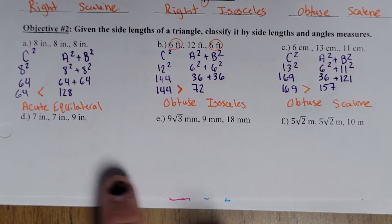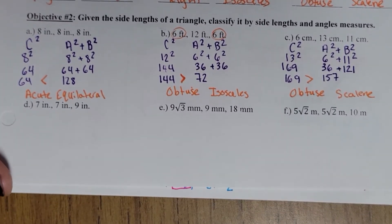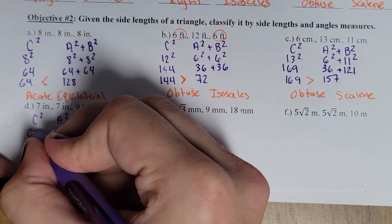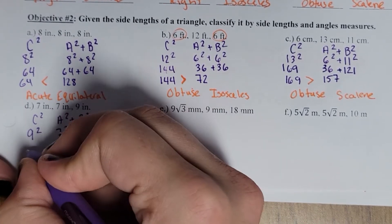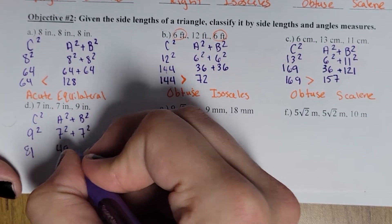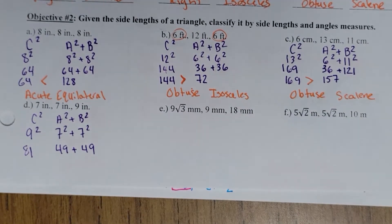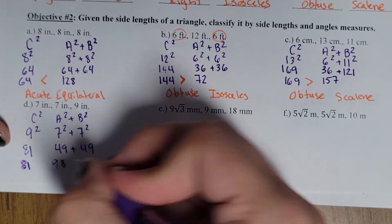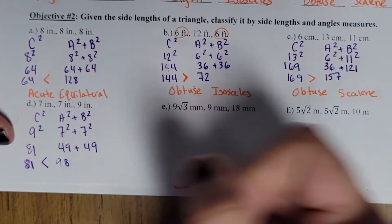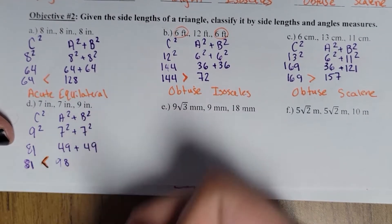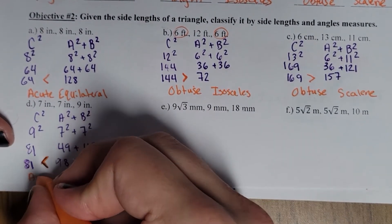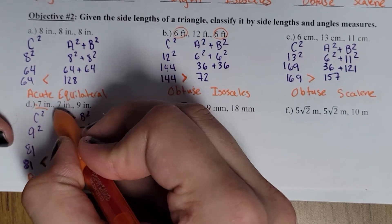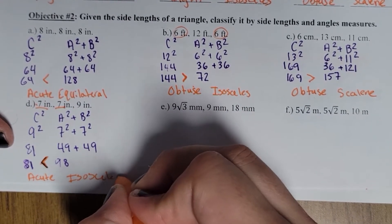Coming down to part D with sides 7, 9, and 7: C squared blank A squared plus B squared. The 9 is the biggest, so 9 goes in for C, and the two 7s go in for A and B. We get 81 blank 49 plus 49. And 49 plus 49 is 98. So 81 is less than 98 — less than represents acute angles. And since two sides are the same — the two 7s — it's an acute isosceles triangle.